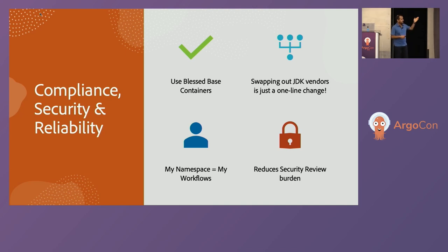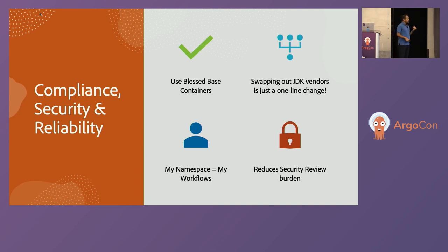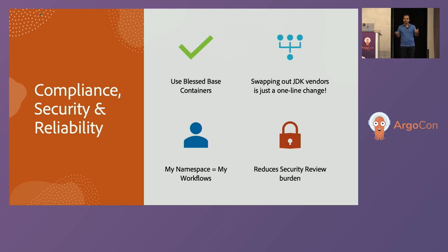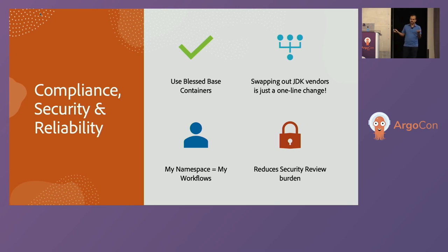Swapping out JDK vendors was a pain point for us — now it's just a container swap and you're done. Another problem we overlook in Jenkins is namespace isolation. Someone once accidentally deleted my container and my whole workflow stopped. In the Argo world, your workflows have their own namespace, so nobody is going to mess with that area and you don't end up stepping on each other.